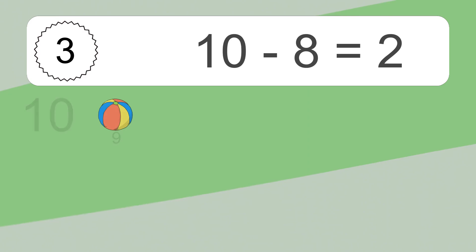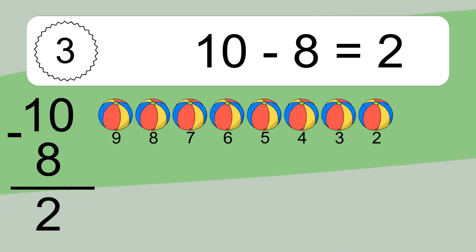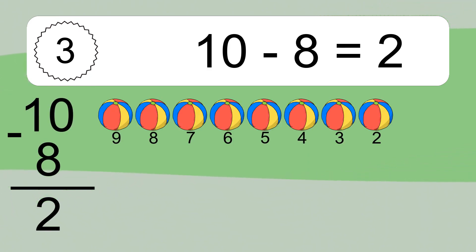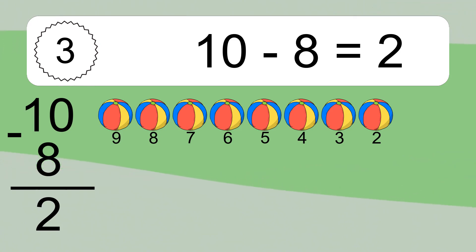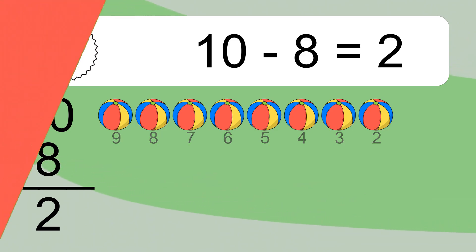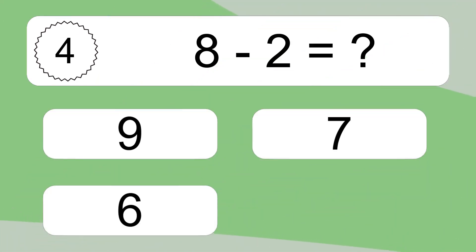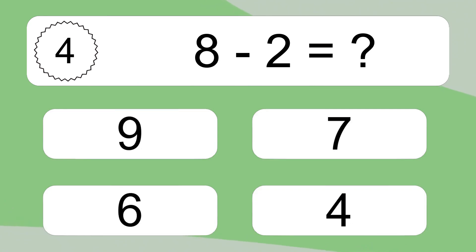10 minus 8 equals what? 10 minus 8 equals 2. Let's count it: 9, 8, 7, 6, 5, 4, 3, 2.